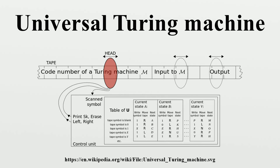Generalizing the standard Turing machine model admits even smaller UTMs. One such generalization is to allow an infinitely repeated word on one or both sides of the Turing machine input, thus extending the definition of universality — known as semi-weak or weak universality respectively. Small weakly universal Turing machines that simulate the rule 110 cellular automaton have been given for certain state-symbol pairs. The proof of universality for Wolfram's two-state three-symbol Turing machine further extends the notion of weak universality by allowing certain non-periodic initial configurations.